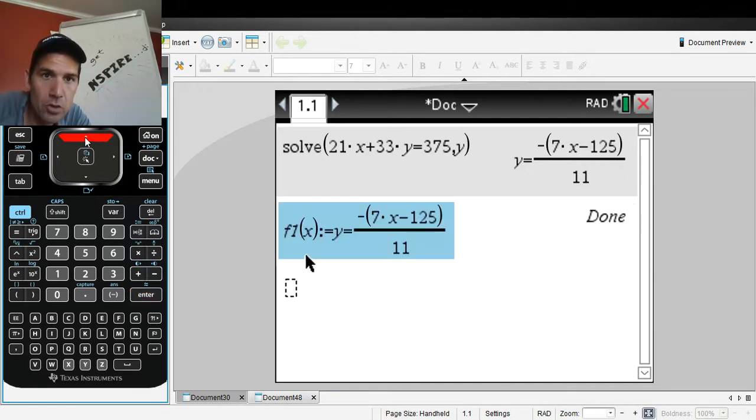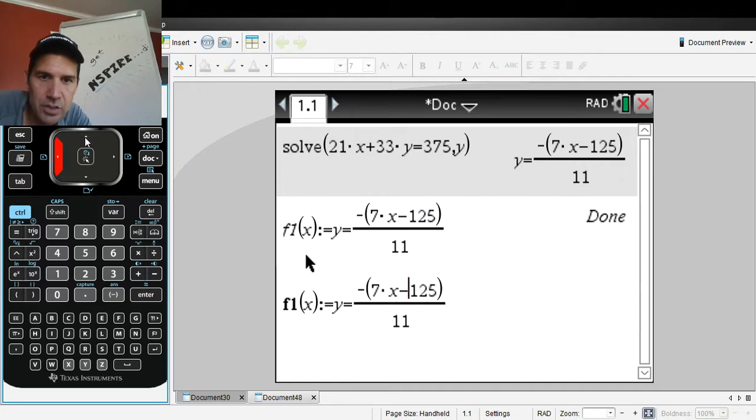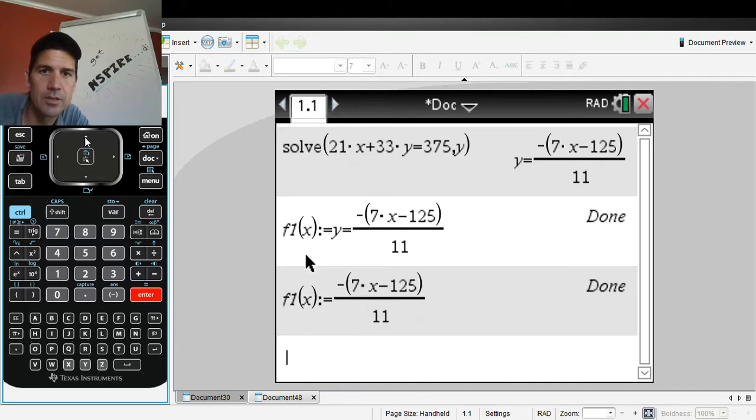Hit enter, and then you can just scroll over to get rid of the Y equals. All right, and you hit enter, and now you actually have a nice function in your F1.